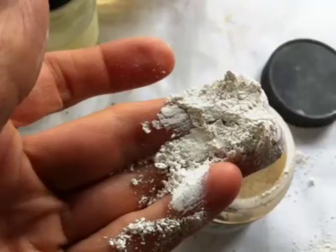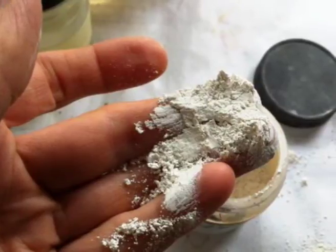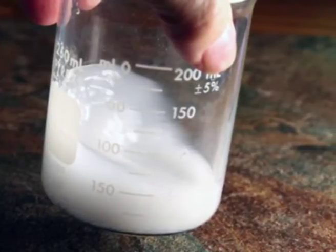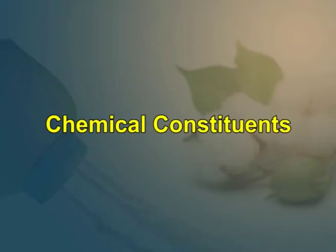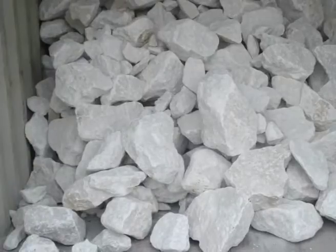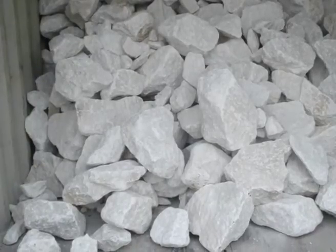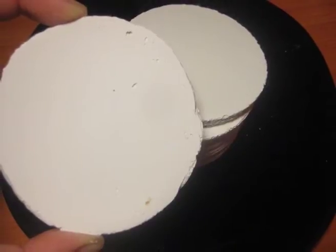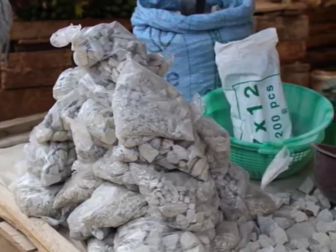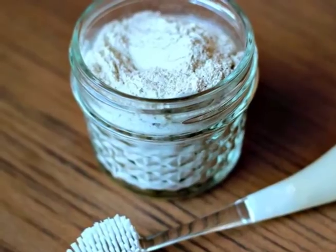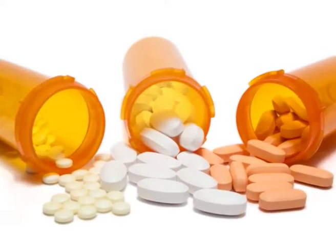Description: chalk is colourless, odourless, white, earthy and soft to touch. It is amorphous and insoluble in water, and when reacted with acid it shows effervescence. It contains calcium carbonate 96%, magnesium carbonate 0.5% and silica 0.5 to 1%. It also consists of traces of iron, manganese and aluminium oxide. Prepared chalk is used as an antacid, a dietary supplement, in dusting powder and as an anti-diarrheal agent. It is used in face powders and as an abrasive in tooth powders and toothpaste, and in manufacturing of antibiotics and other pharmaceuticals.